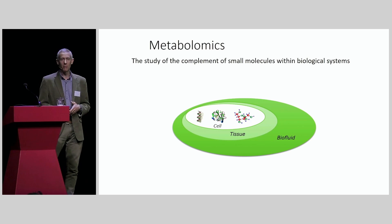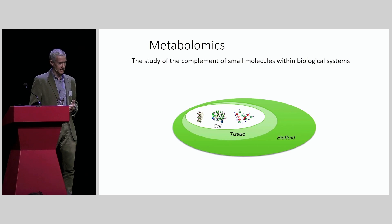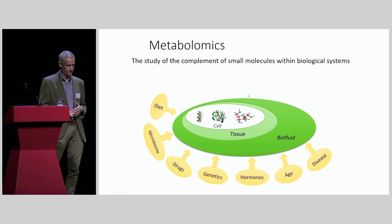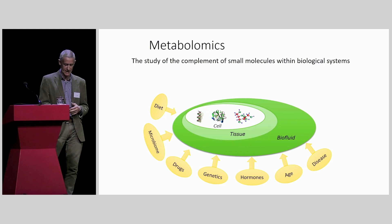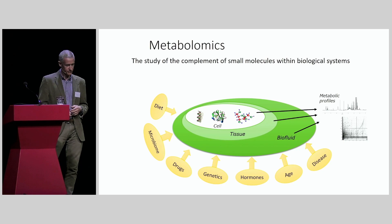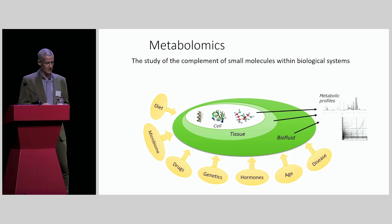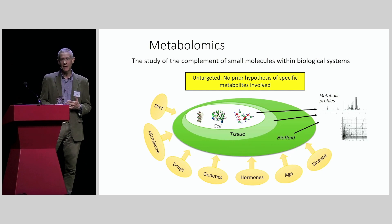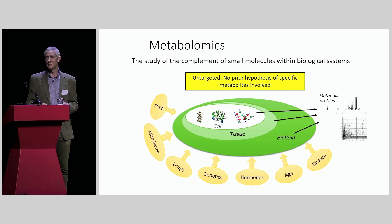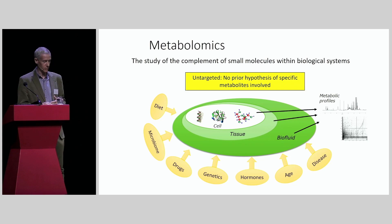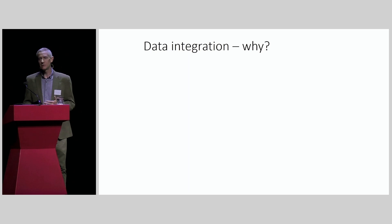Metabolomics, for those who haven't come across it, is the study of the complement of small molecules within biological systems. We might have a biofluid encompassing tissue and cells. The different samples — cell, tissue, biofluid — can be influenced by many different things, and the levels of metabolites in those compartments will be influenced as well. We can assay those using metabolic profiling technologies such as NMR spectroscopy and LC-MS. The key point about metabolomics is that it's untargeted — we don't make an a priori decision about which metabolites are involved. We measure as many metabolites as possible and at the end come back to see what important biology we've observed.